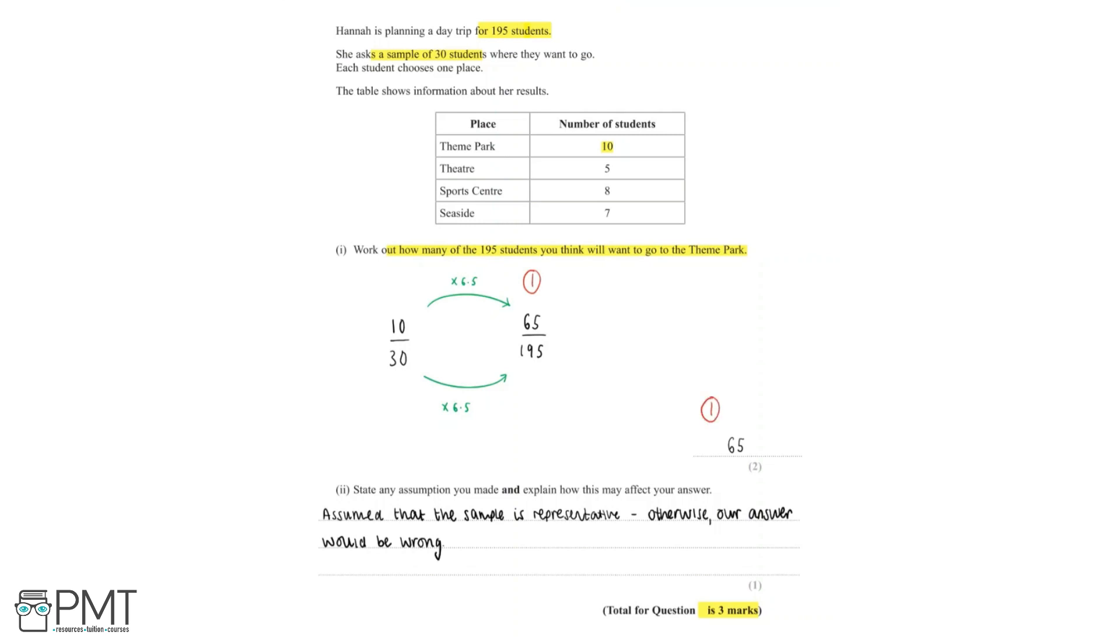And we get the 3rd mark for stating our assumption that the sample is representative, and for saying that if the sample wasn't representative, our answer to part i would be wrong.